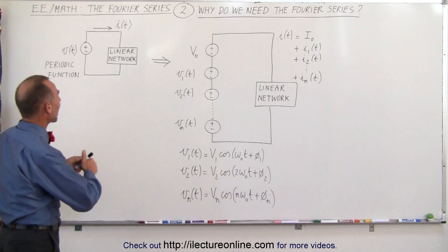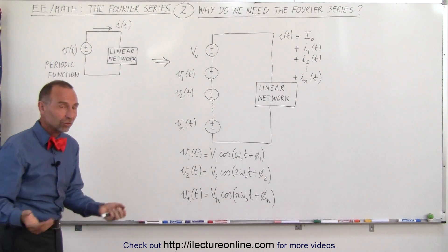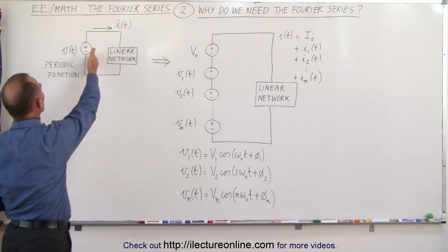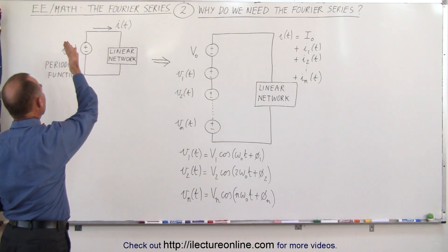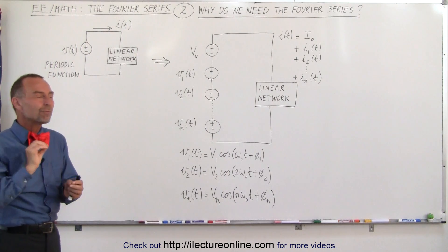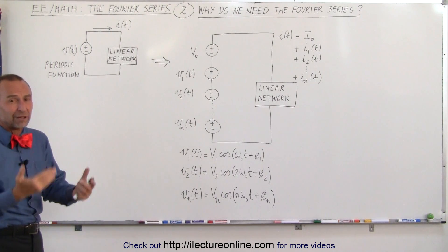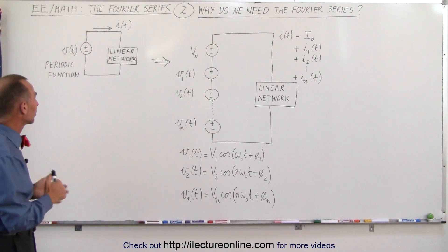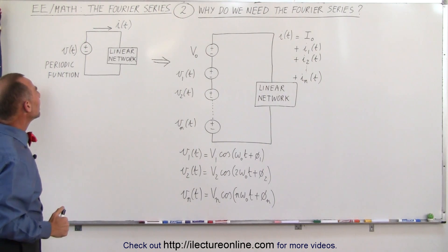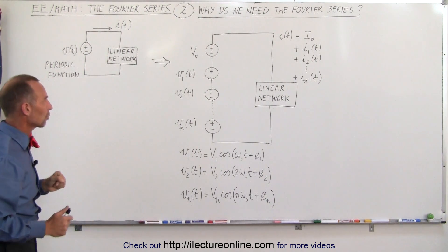Let's say we have a linear network of resistors, capacitors, inductors and so forth, and we have some input voltage which happens to be a periodic function but a non-trigonometric periodic function — like a square wave function or a sawtooth function — and we need to know what the current will be through our linear network.